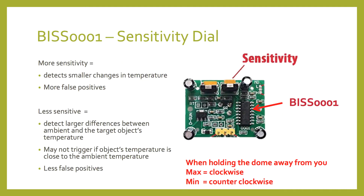The sensitivity dial will adjust the sensitivity threshold of the module. More sensitive means the sensor will detect and trigger with smaller changes of temperature — for example, if the animal is further away or there's less temperature difference between the ambient temperature and the temperature of the animal. The side effect is that you'll also get more false positives. Less sensitivity means the sensor will only trigger if it detects a larger difference between the ambient temperature and the target object, resulting in less false positives, but the sensor may not trigger if the body temperature of the target object is near the ambient temperature.